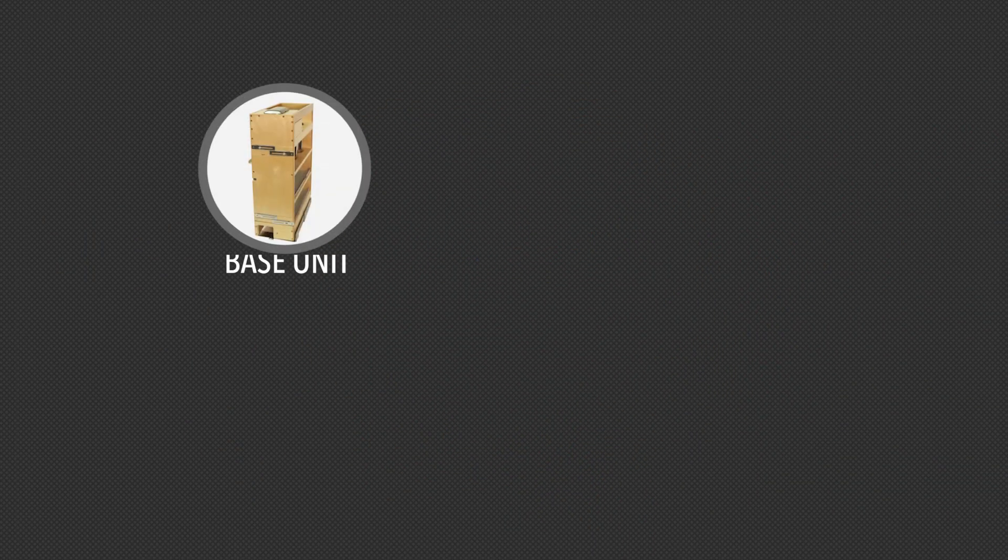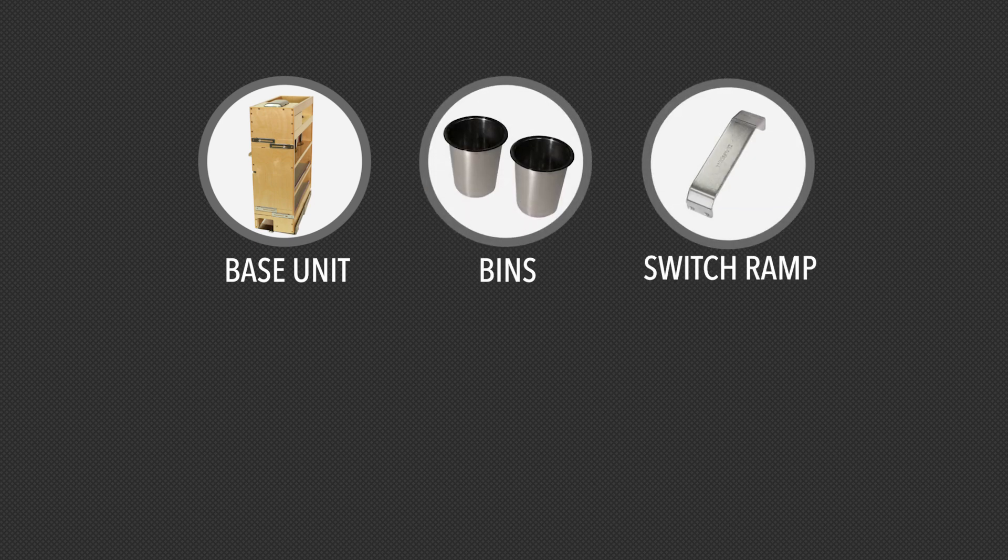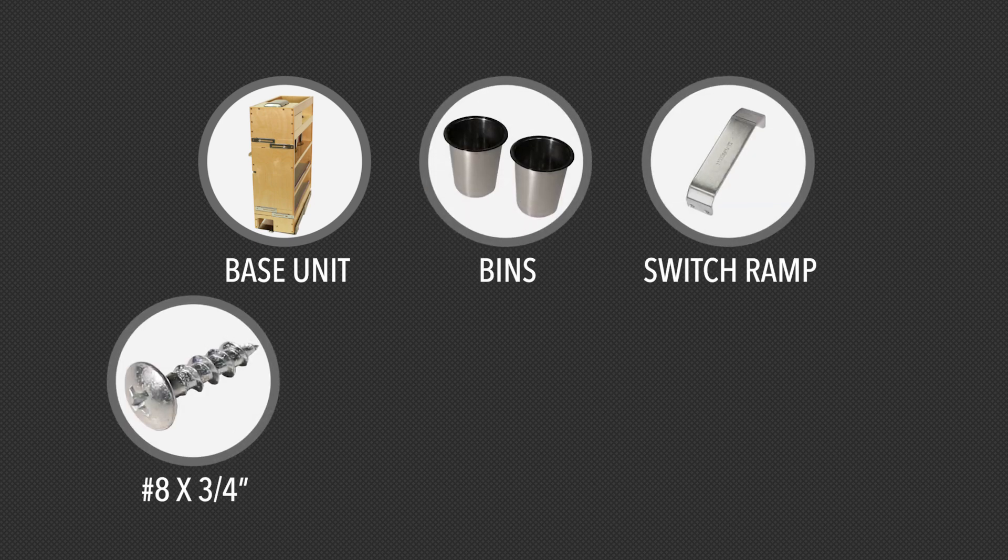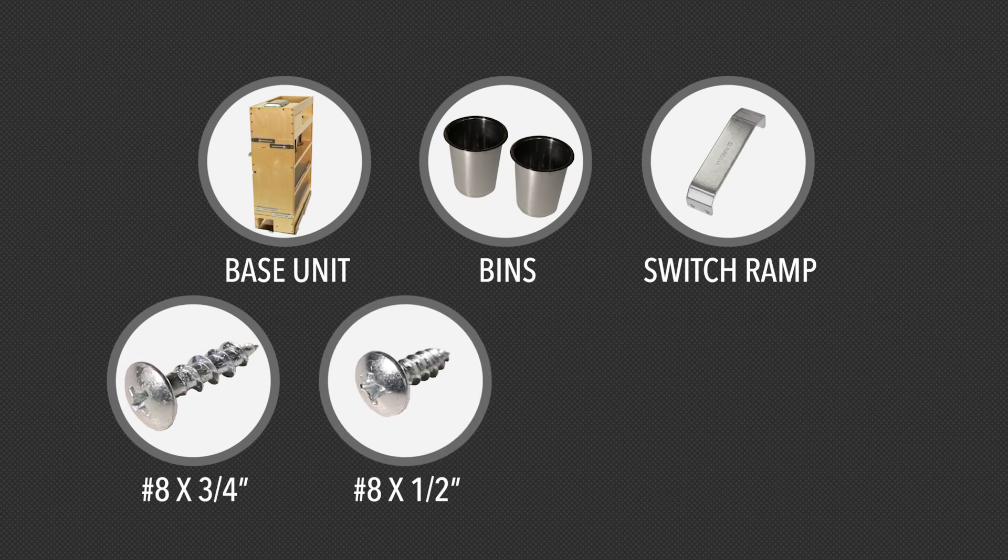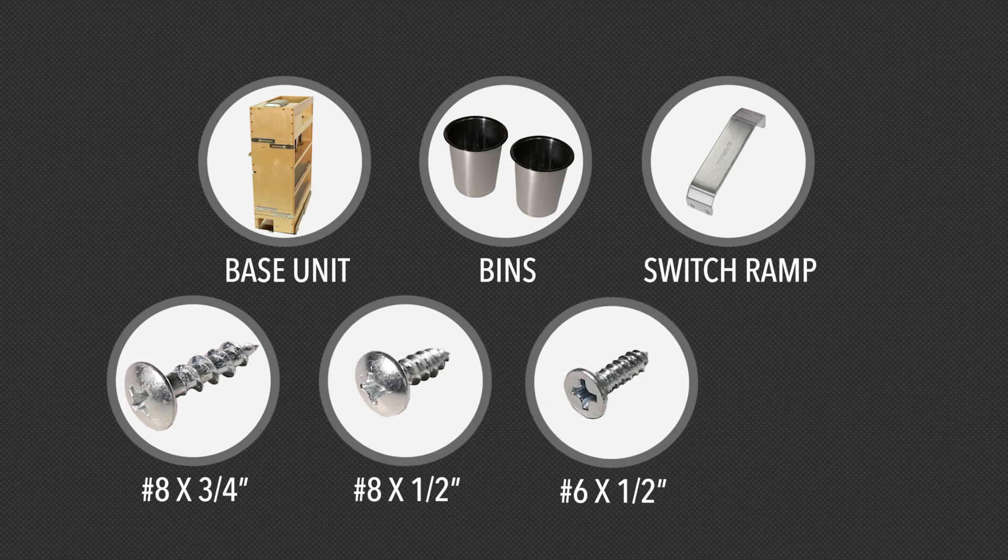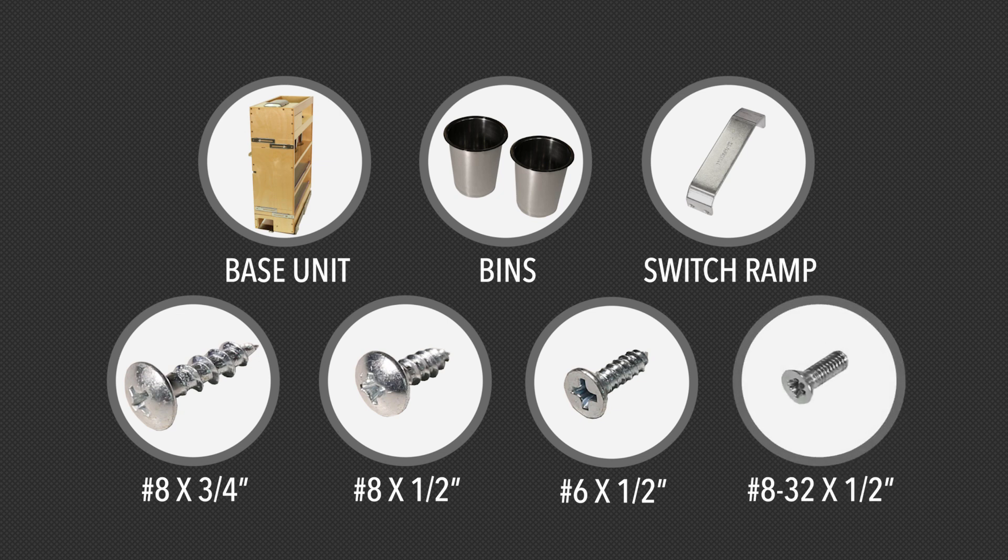In your box you'll find the following parts: a 445 base unit, bins, a switch ramp, number 8 by 3/4 inch deep thread screws, number 8 by 1/2 inch pan head screws, number 6 by 1/2 inch flat head screws, and number 8-32 by 1/2 inch machine screws.